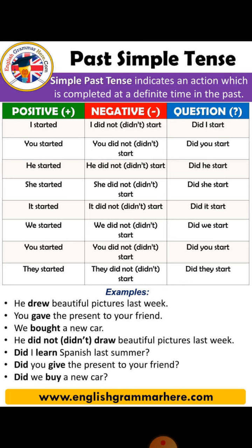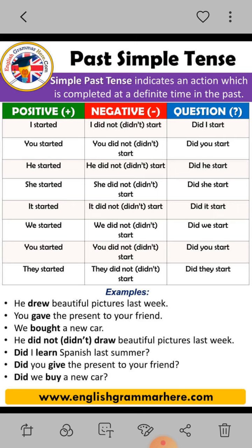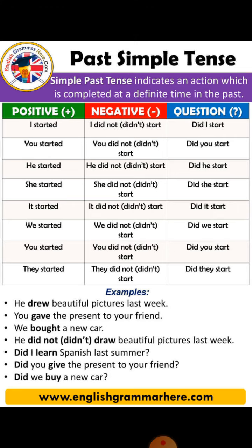Positive, negative, interrogative. Formula — positive: subject plus second form of verb plus object. We have to apply only the second form of verb in a positive sentence.